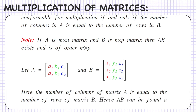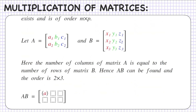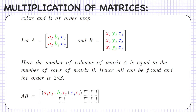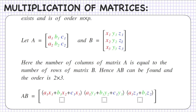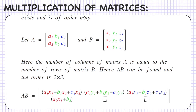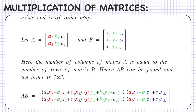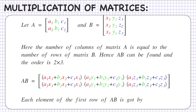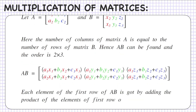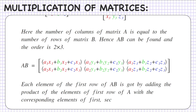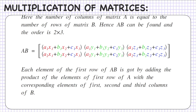For matrices A equals [A1, B1, C1; A2, B2, C2] and B equals [X1, Y1, Z1; X2, Y2, Z2; X3, Y3, Z3], AB is given by [A1·X1+B1·X2+C1·X3, A1·Y1+B1·Y2+C1·Y3, A1·Z1+B1·Z2+C1·Z3; A2·X1+B2·X2+C2·X3, ...]. Each element of the first row of AB is the sum of the products of the elements of the first row of A with the corresponding elements of each column of B.